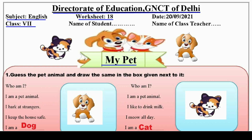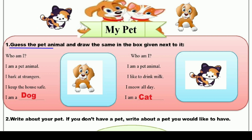تو دیکھتے ہیں ایک بار، بہت ہی اچھی activity ہے جو first activity ہے۔ Question number one is: Guess the pet animal and draw the same in the box given next to it. آپ کو سب سے پہلے ایک pet animal کے بارے میں left side پر کچھ lines لکھی ہیں، ان کو پڑھ کے سمجھنا ہے کہ وہ pet animal کونسا ہے۔ ساتھ ساتھ ان کی picture کو draw کرنا ہے، یا picture paste بھی کر سکتے ہیں — کئی بار newspapers میں بھی یہ photographs ہوتی ہیں، آپ وہ بھی لگا سکتے ہیں۔